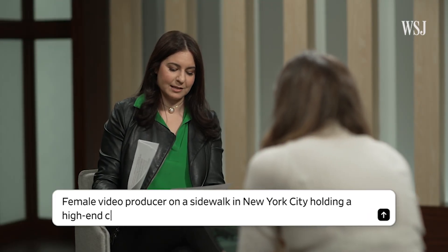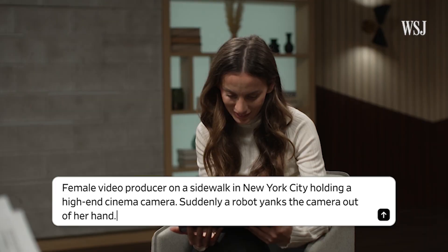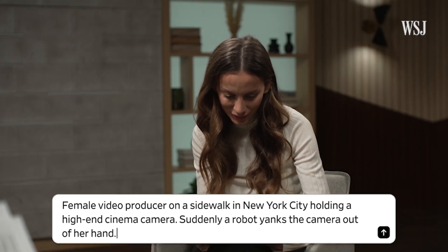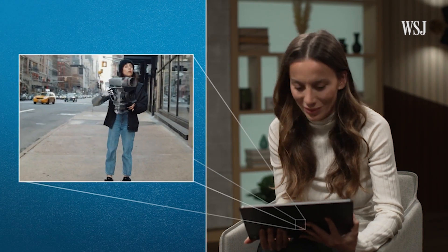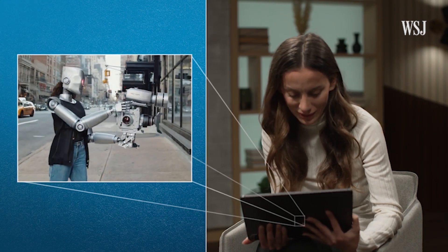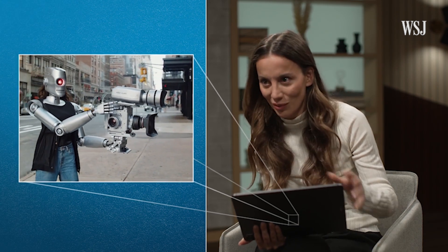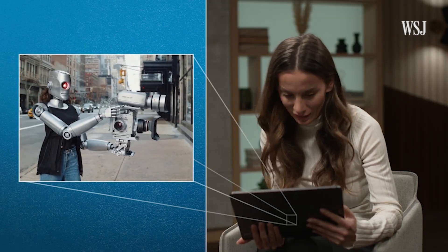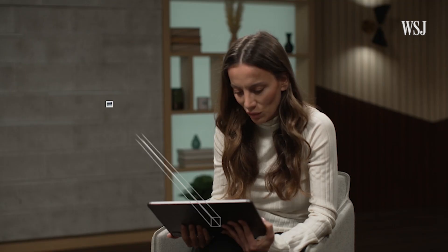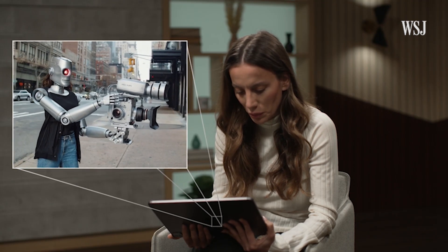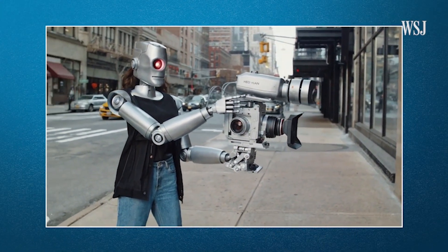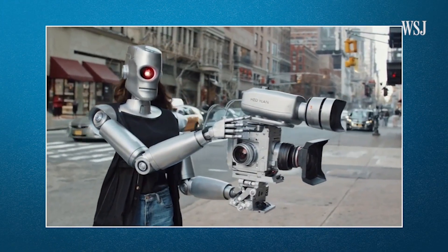One prompt was: a female video producer on a sidewalk in New York City, holding a high-end cinema camera — suddenly a robot yanks the camera out of her hand. In this one, you can see the model doesn't follow the prompt very closely. The robot doesn't quite yank the camera out of her hand; the person sort of morphs into the robot. A lot of imperfections still. Also, when the cars are going by, they change colors — the yellow cab disappears from the frame and comes back in a different frame.